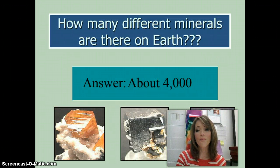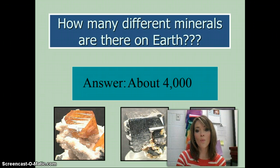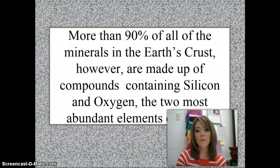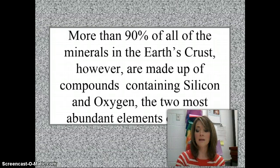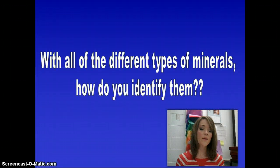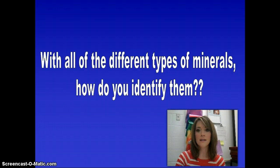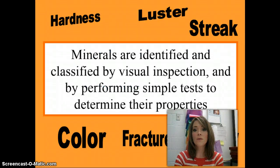There are about 4,000 different minerals on Earth, but don't worry — we're just going to do a few of the most common ones. While there are about 4,000 minerals, there are only about 20 to 30 rock-forming minerals. Ninety percent of the crust is made up of compounds of silicon and oxygen — not silicon and oxygen by themselves, but compounds containing those two most abundant elements. So how do scientists identify all those different kinds of minerals? They look at their properties.